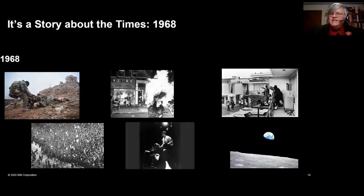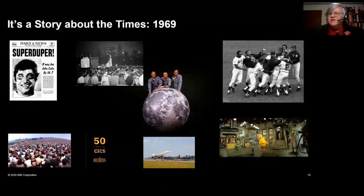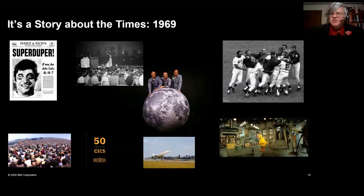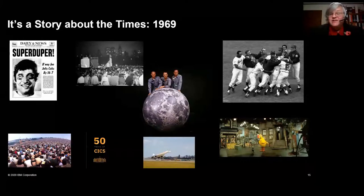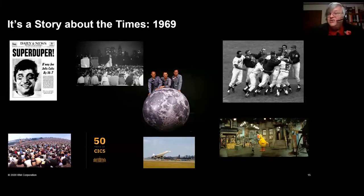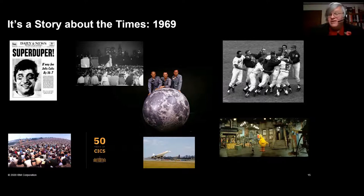It's a story about the times — terrible year, ends very optimistically, and then comes 1969. I grew up in Queens, New York, where there is a football team. The New York Jets, who were 17-point underdogs, boldly promised they would win the Super Bowl — and they won. We have Woodstock, the New York Mets taking the World Series, the premiere of Sesame Street, the first flight of the Concord, the first CICS release. And smack dab in the middle of all that, we have the landing on the moon. 1969 was a great year to be alive.